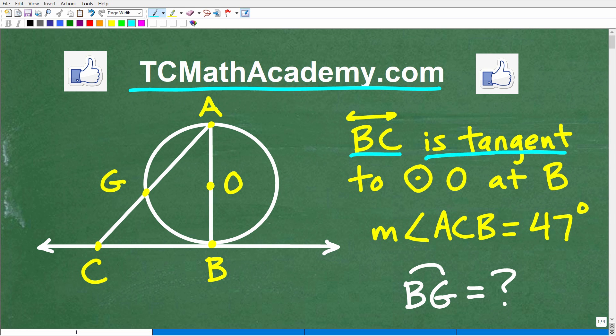Line BC is tangent to circle O at point B. The measure of angle ACB is 47 degrees. So what we're looking for here is what is the measure of this arc BG, from here to here.